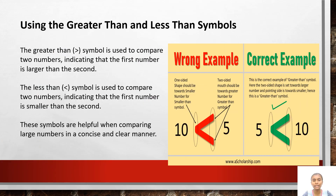Using the greater than and less than symbols: the greater than symbol is used to compare two numbers, indicating that the first number is larger than the second. The less than symbol is used to compare two numbers, indicating that the first number is smaller than the second one. These symbols are helpful when comparing large numbers in a consistent and clear manner. If one value is larger than the other, we use the greater than symbol. If one value is less than the other, we use the less than symbol.